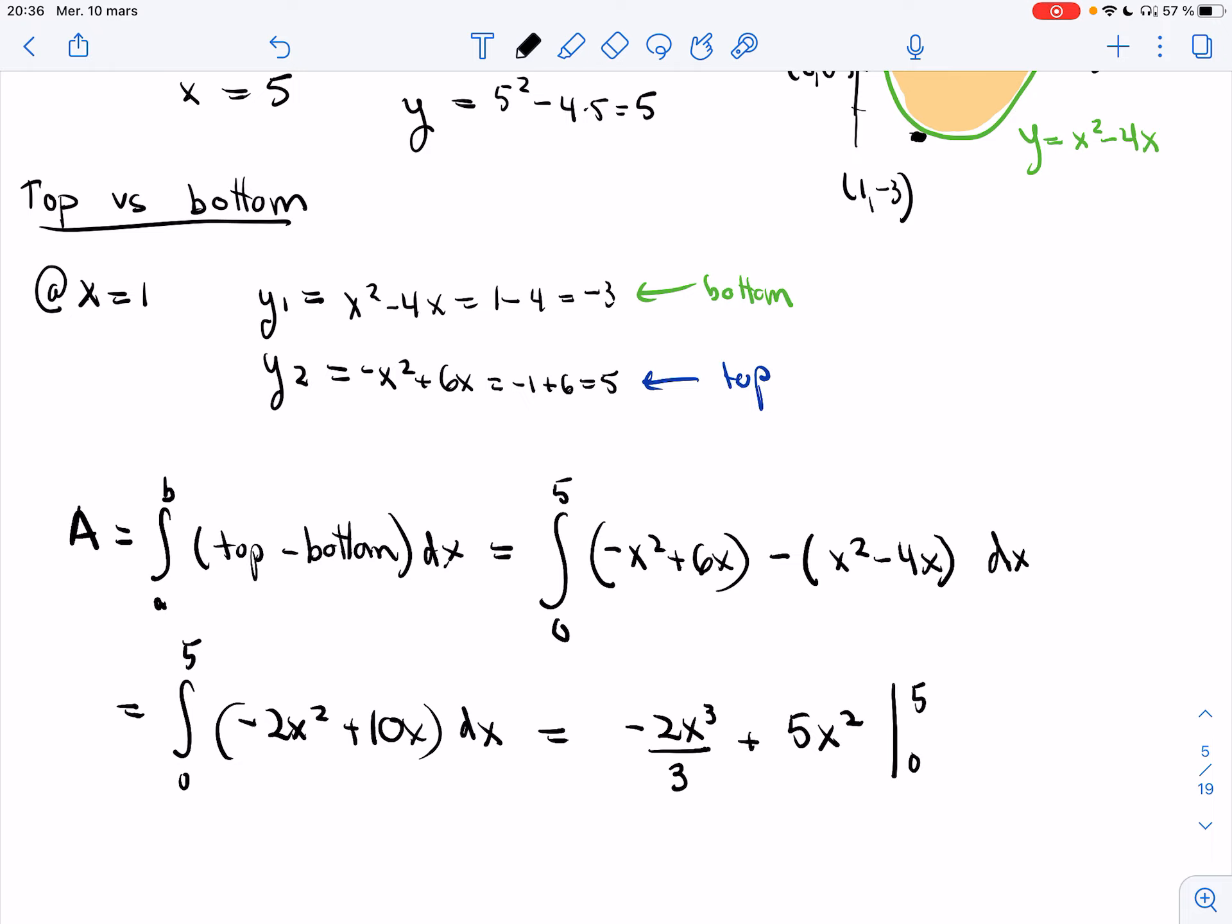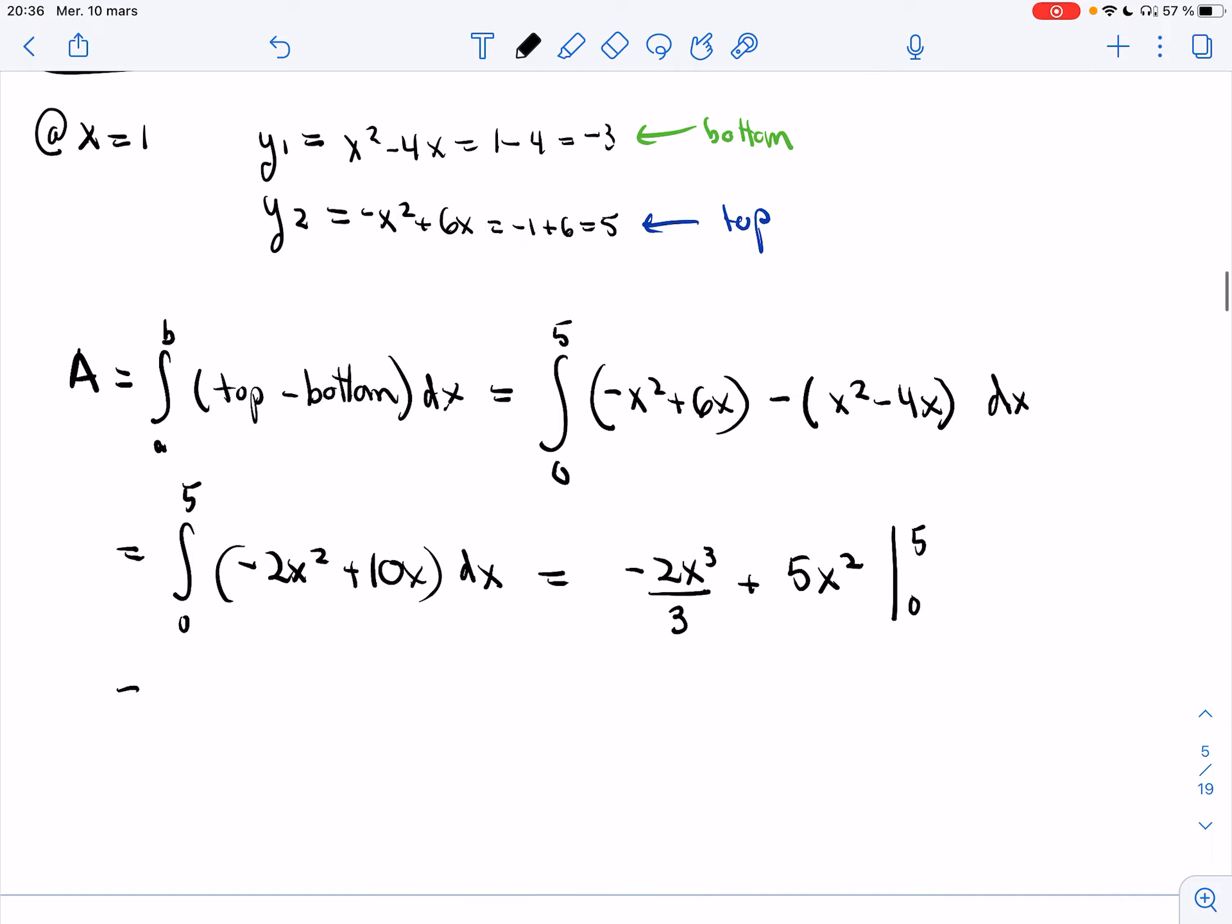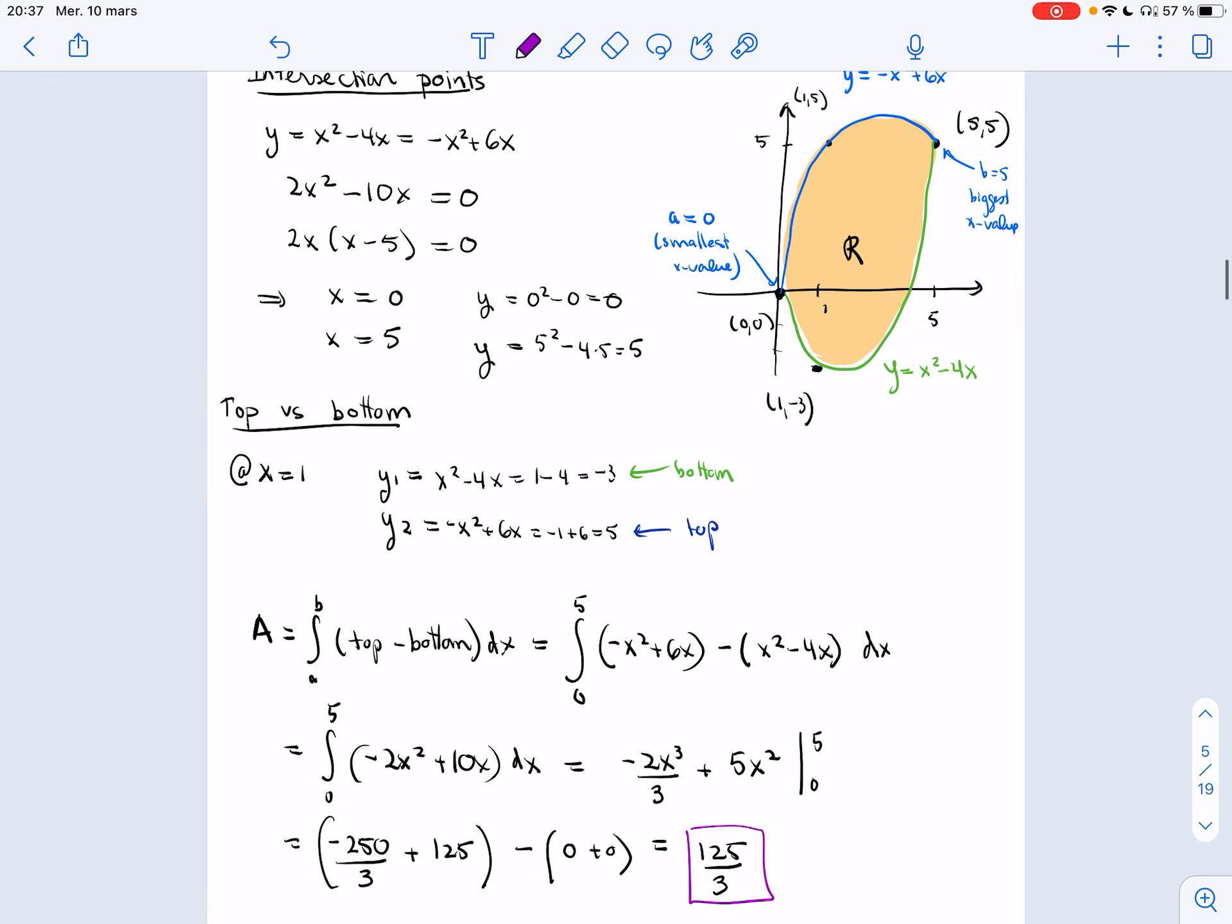Alright, from 0 to 5. I'm going to plug in 5. That's going to give me 125 times 2 minus 250. 25 times 5, 125. And then I plug in 0, and I plug in 0. I actually computed it before. It gives you 135 thirds. Alright, so that's the actual area of this region.